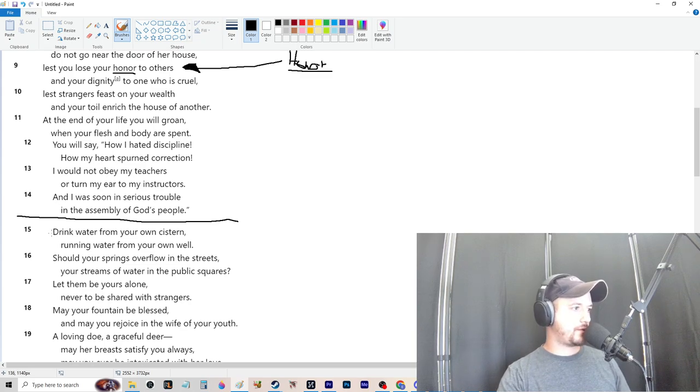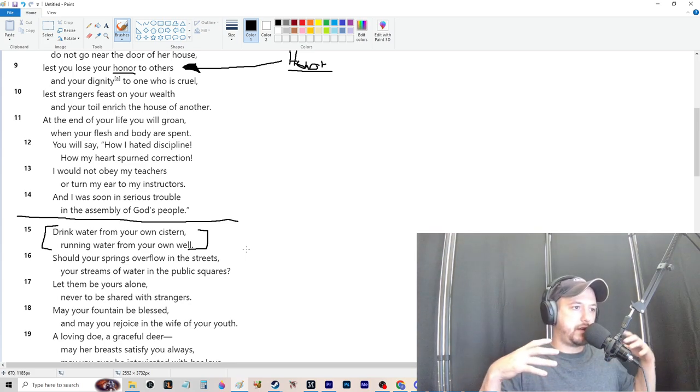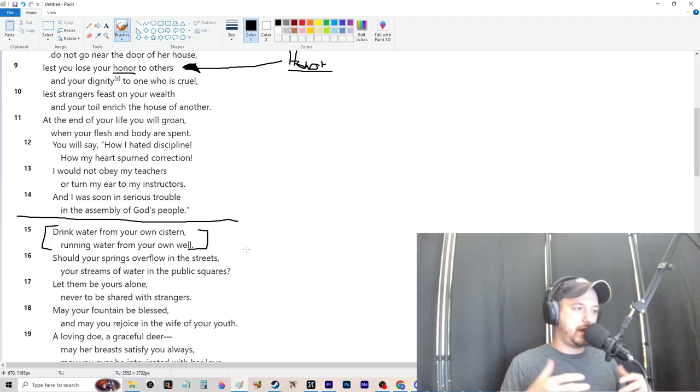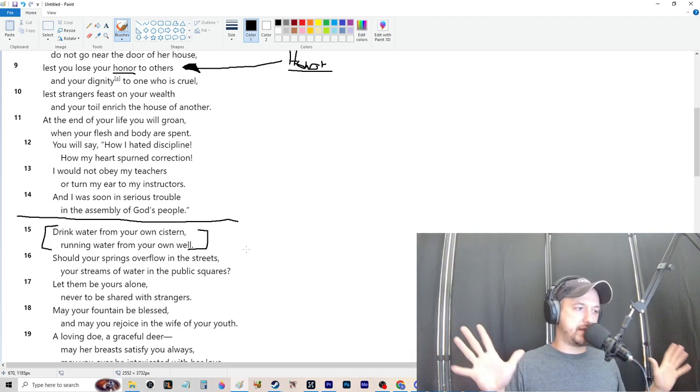Anyway, verse 15: Drink water from your own cistern and running water from your own well. So it means maintain your own relationship, stay inside your own relationship. The drug is the same, regardless if it's in your relationship or somebody else, like at the lizard brain level. Should your springs overflow in the streets? Should your streams of water in public squares. And that's what it's saying. Like if you go to try to have sex with everybody who has a pulse, your internal spring, it'll go into the water. Any water that goes into a street is going to just dissipate and evaporate into nothing.